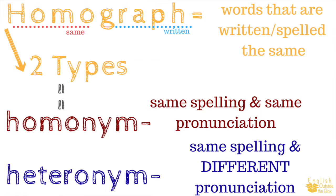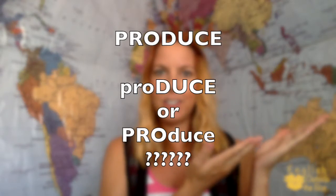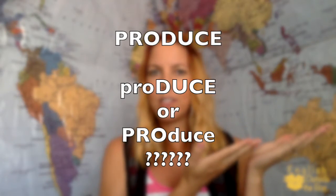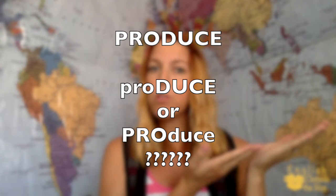Today we're going to be looking at heteronyms — words that are written the same but have a different pronunciation. As an English learner, it can be very confusing to know which pronunciation is which. When it comes to heteronyms, there's a pretty simple rule that you can follow to help recognize and produce the correct pronunciation.